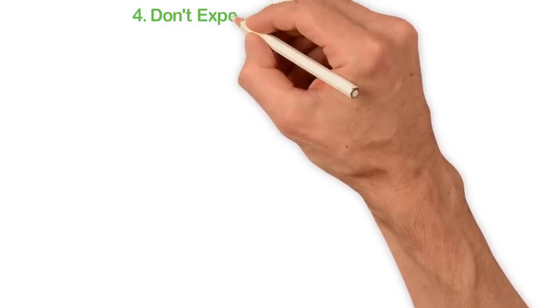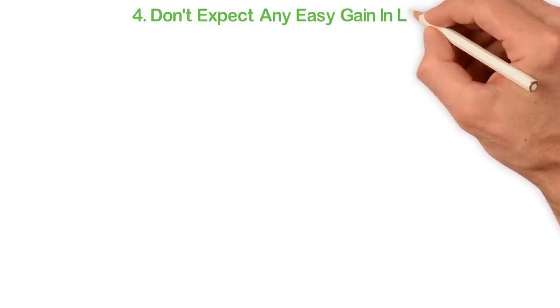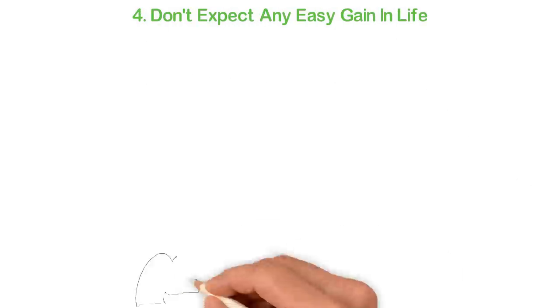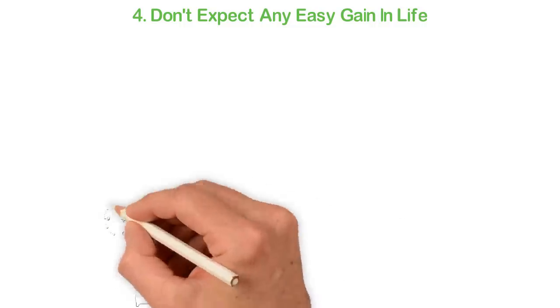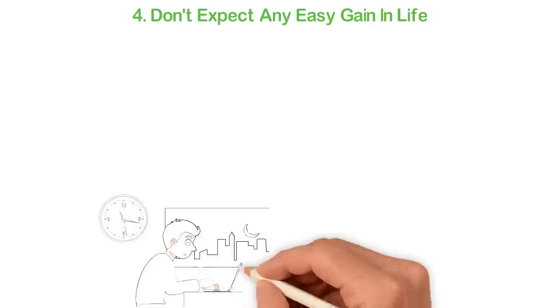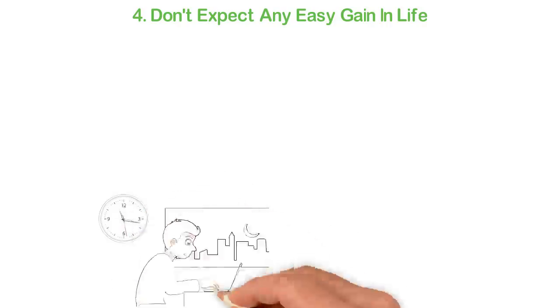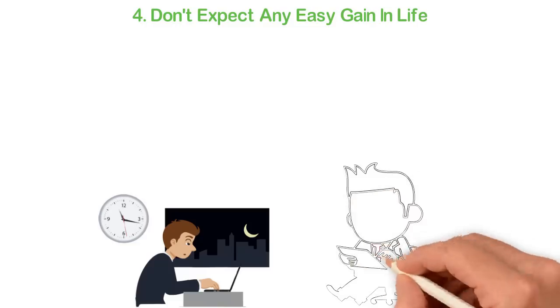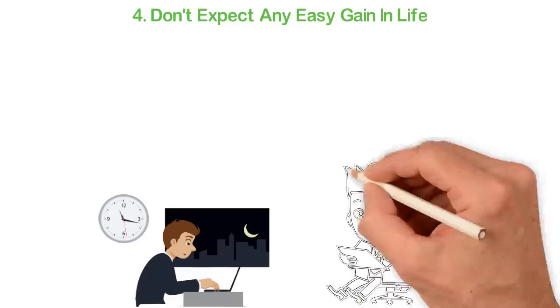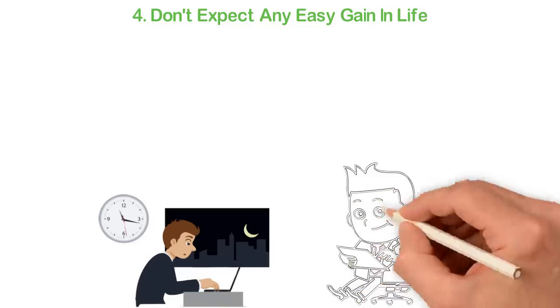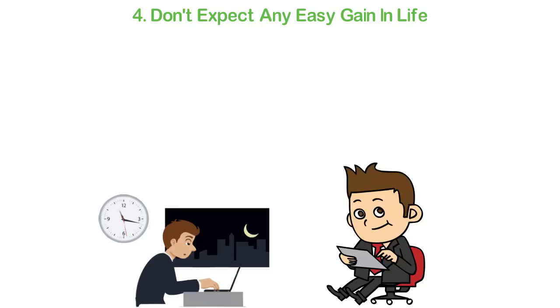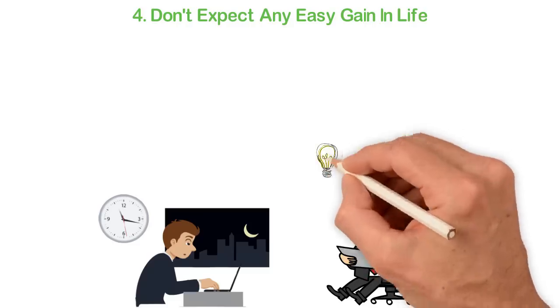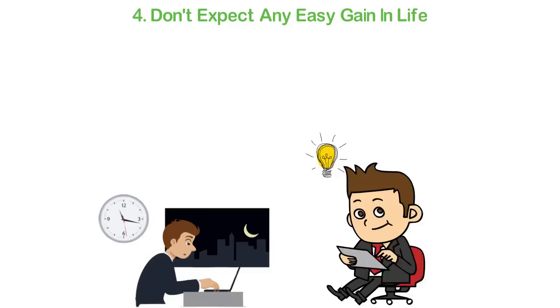4. Don't expect any easy gain in life. You have to stop deceiving yourself. You have to stop expecting anything to come to you easily because it won't come. Except you're willing to fight, you can get nothing out of life. Life owes you nothing and it will give you nothing except what you're willing to fight for. You must be willing to make sacrifices, do the hard things, delay gratification and plan for a long, tedious journey.